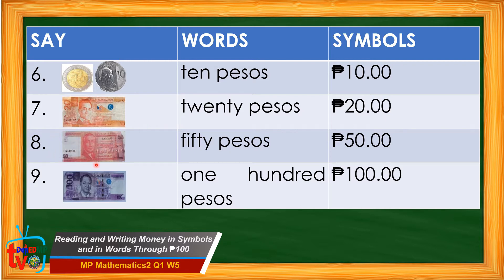For number eight, we say fifty pesos. If we write it in words, we write the words fifty then pesos. And if we write it in symbols, first we write the peso sign then the amount which is fifty followed by a decimal point and two zeros. We read this as fifty pesos. For number nine, we say one hundred pesos. If we write it in words, we write one hundred then pesos. And if we write it in symbols, we write first the peso sign then the amount which is one hundred followed by a decimal point and two zeros.